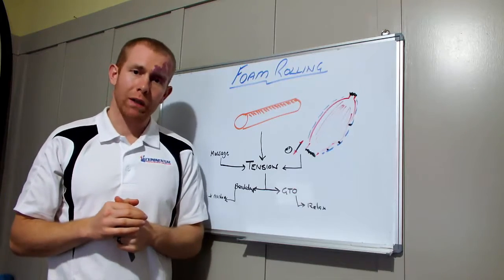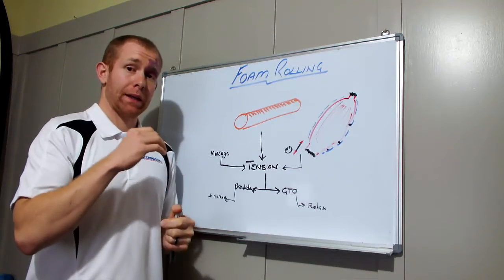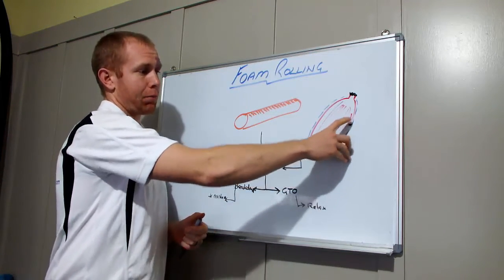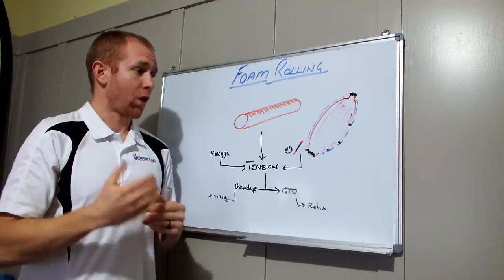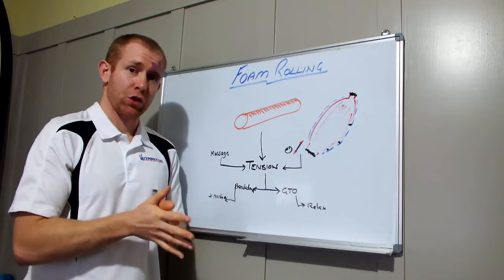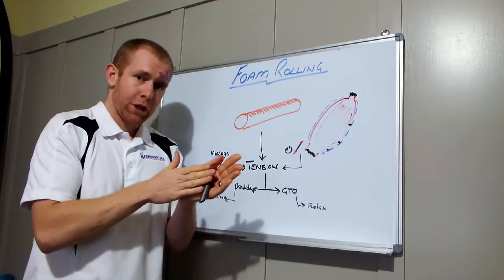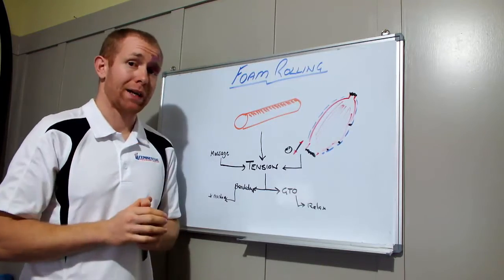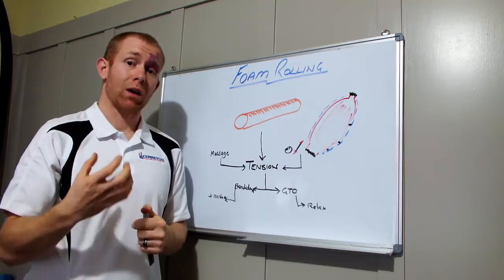So with foam rolling, one of the main ways foam rolling improves mobility is to mechanically break these sites of adhesion down. So rolling on them mechanically breaks the tissue down just like a massage does, and then the myofascial layer is able to smoothly slide again. So to get that breakdown happening, you have to create quite a lot of tension.